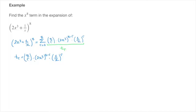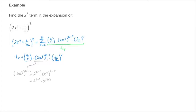We'll start with the middle term: 2x to the power of 3, raised to the power of 8 minus r. This power distributes onto each of the two factors inside the parentheses, giving us 2 to the power of 8 minus r times x to the power of 3, raised to the power of 8 minus r. That power of 8 minus r then multiplies the power of 3, giving 2 to the power of 8 minus r times x to the power of 3 times 8 minus r, which distributes to x to the power of 24 minus 3r.